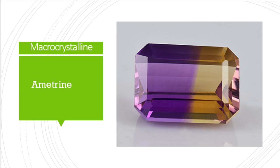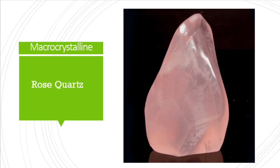Ametrine is an interesting stone since it contains both amethyst and citrine. There is a boundary where on one side you will see the purple color of amethyst, while the other side has citrine, the yellow color quartz. Natural ametrine is very rare and has high demand compared with amethyst and citrine. Then there is rose quartz.